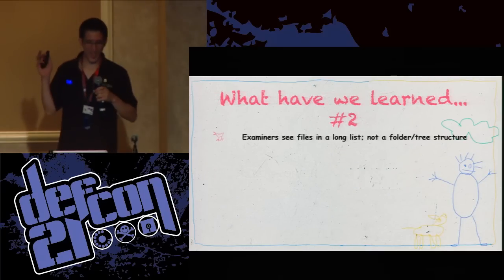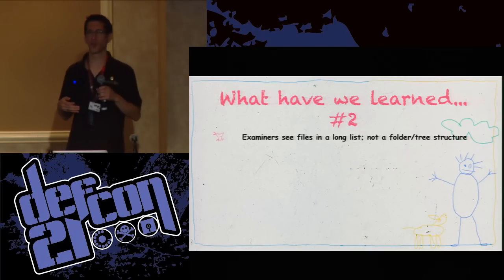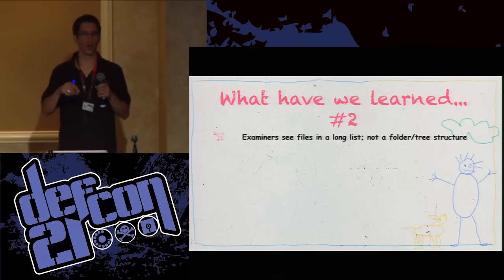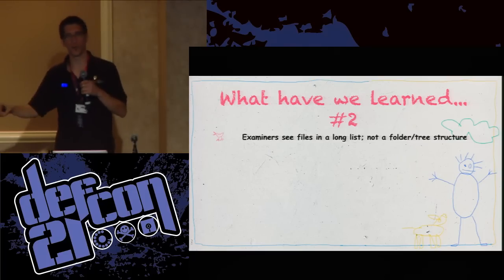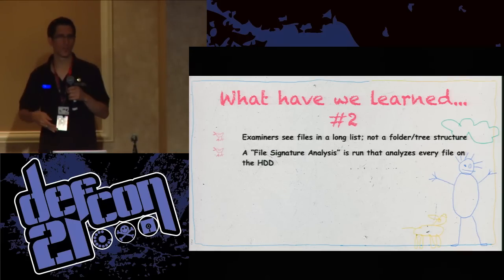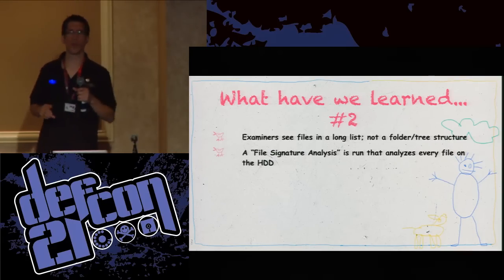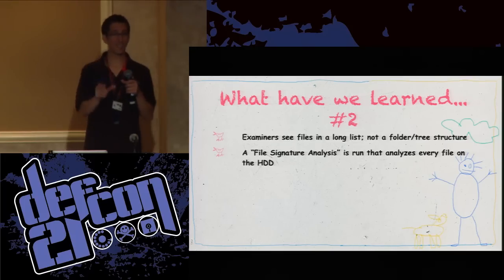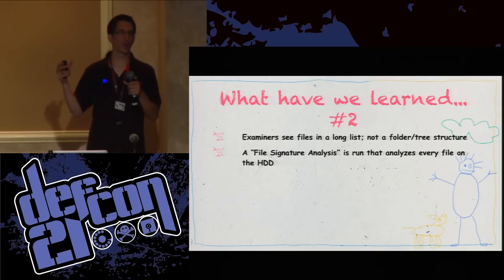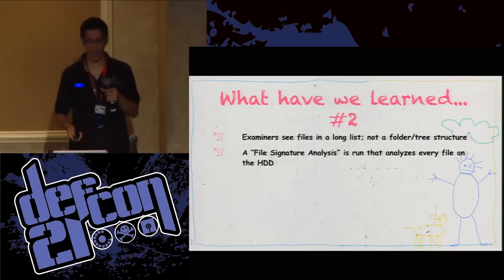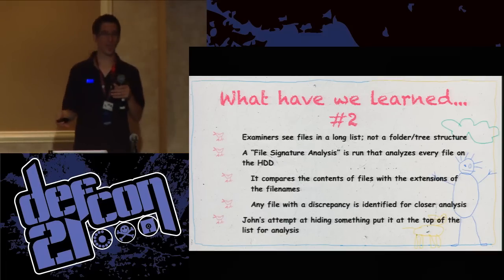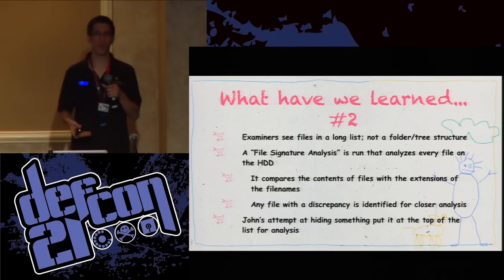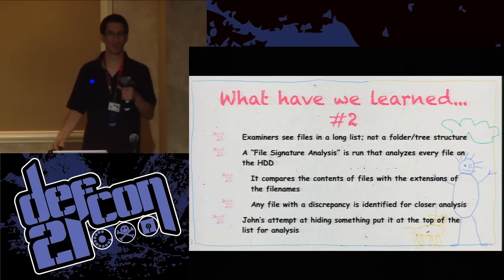What have we learned? Examiners, when we take a look at files on a computer, we don't typically look at it in the nested folder structure. We don't have to go into every single subfolder — we see it on a big long list. It makes it a lot easier to analyze stuff. Also, one of the very first things we always run is what's called a file signature analysis — a special script that looks at the contents of every file and compares what's inside the file with the extension. If there are any discrepancies, those files are bumped up to the top of the list. John's attempt at hiding his pregger porn actually made it bump to the top of the list. If you're going to hide something, don't just change a file name — that makes me want to look at it even more.